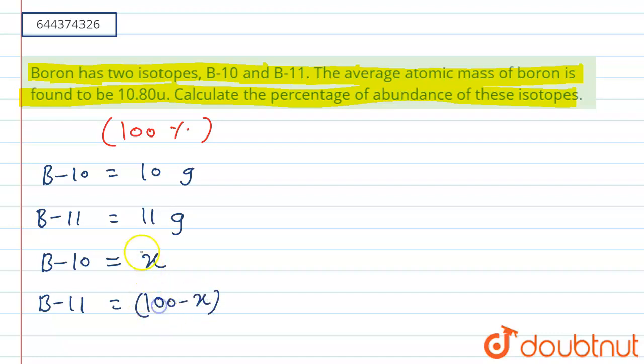That is we have x percent abundance of B-10 isotope, then we have 100 minus x percent abundance of B-11 isotope. Now our average atomic mass is given as the molecular mass of one isotope that is 10 which is multiplied by its percent abundance...